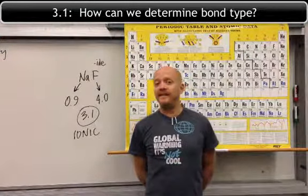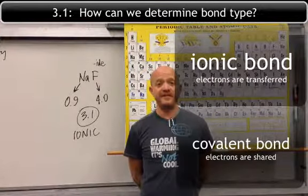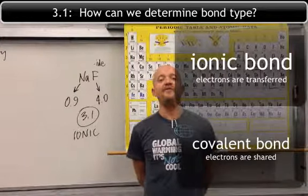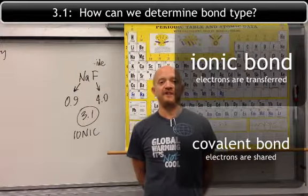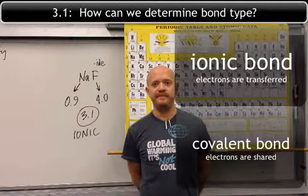Now regarding the electrons, in an ionic bond, the electrons are transferred, while in a covalent bond, the electrons are shared. And we'll talk a little bit more about that tomorrow. Thank you.